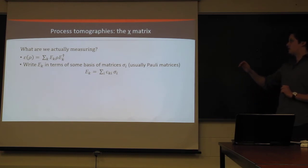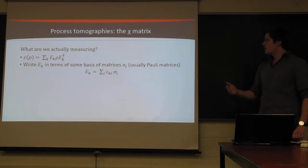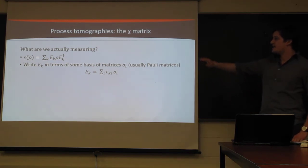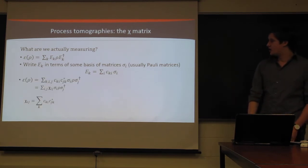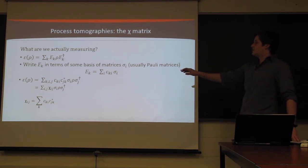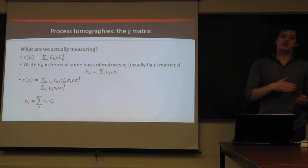So for the most part, we'll use Pauli matrices, so I, X, Y, and Z. And this is a complete basis, so any of these individual operations can be split up and written as a linear combination of Pauli matrices. Then if we shove everything back in, we just end up with our process looks like a Pauli matrix process, but with a complex matrix that controls the weighting of all of the individual combinations of Pauli matrices.